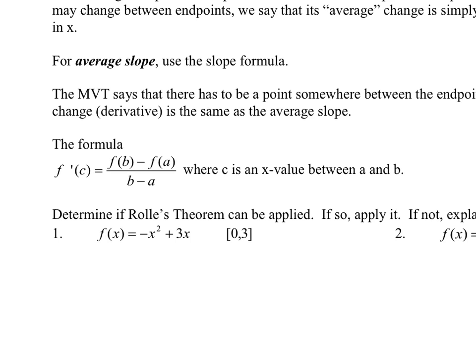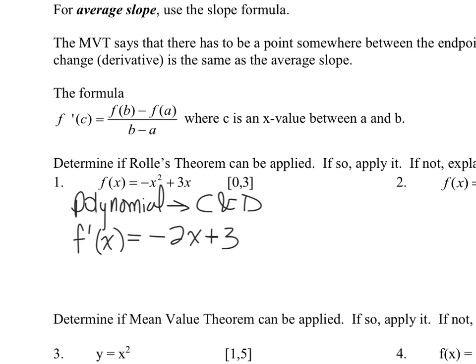Rolle's theorem is telling us that if it's a continuous differentiable function on an interval, there must be an instance of which the derivative is equal to zero at some point along the curve. We can verify that it's polynomial, therefore it's continuous and differentiable. So I could do a quick f prime and get negative 2x plus 3, set it equal to zero, and you get x equals three halves.